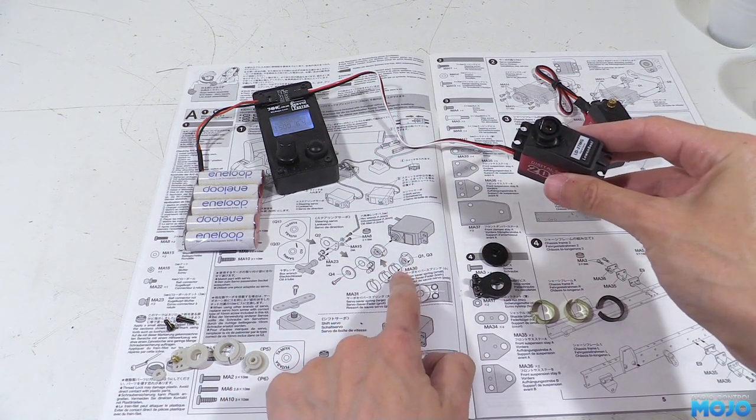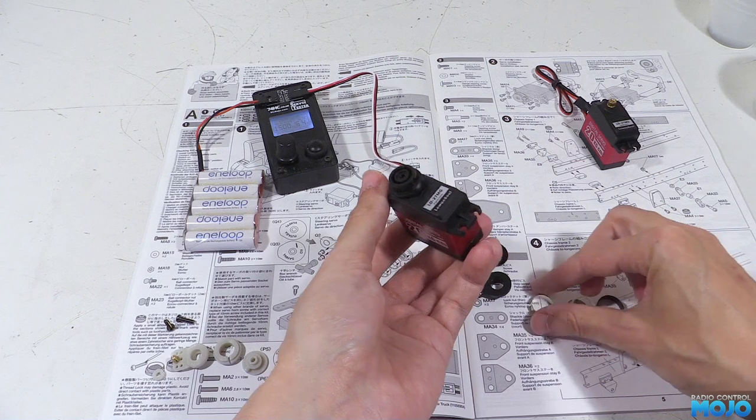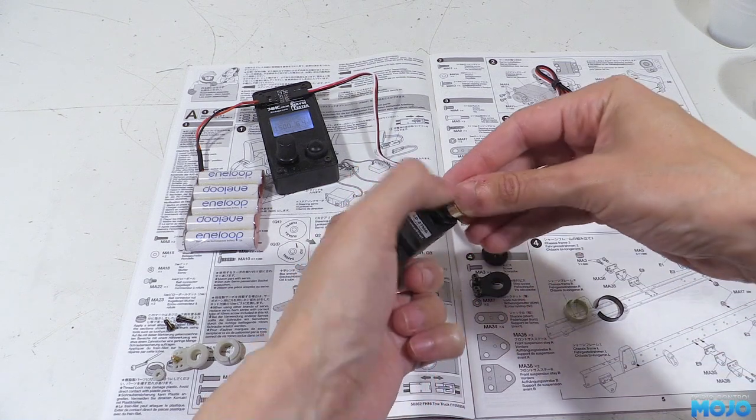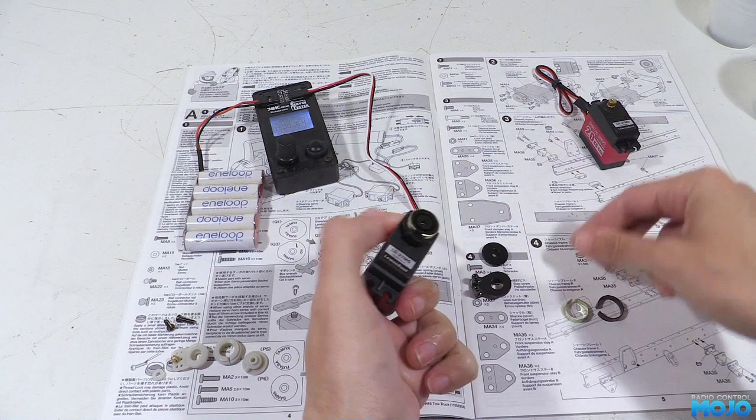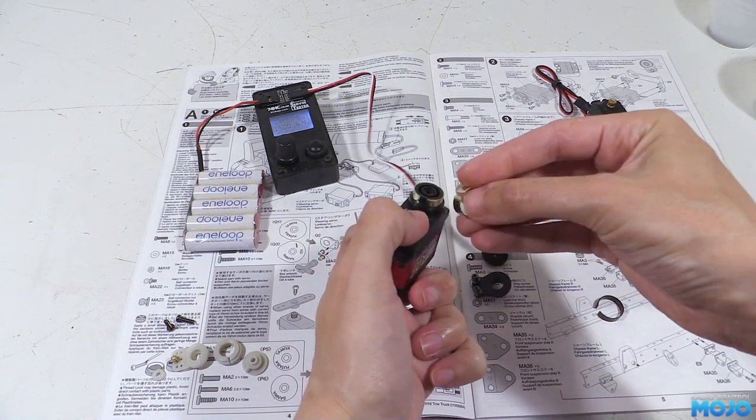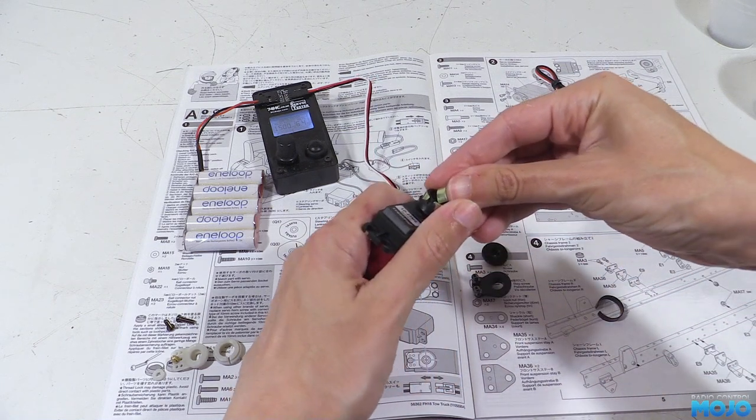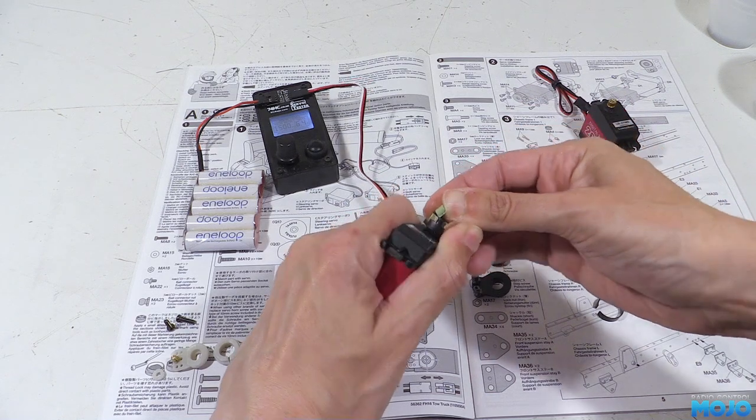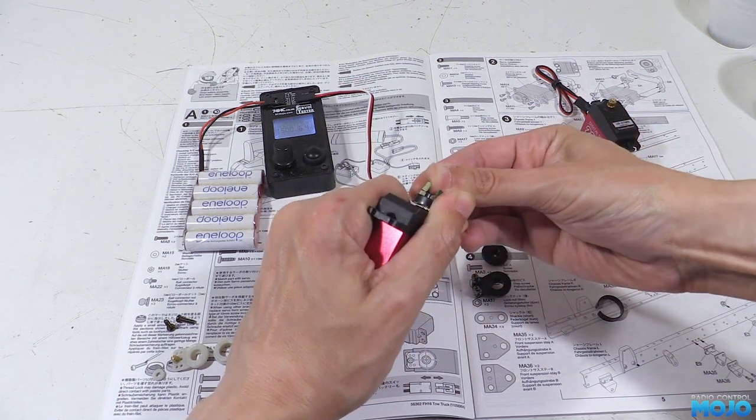Of course, it's never quite that simple. Servos aren't always completely accurate, you almost always end up with the servo arm slightly off one side or the other. The trick is to find the point where it's as close to straight as you can get it.